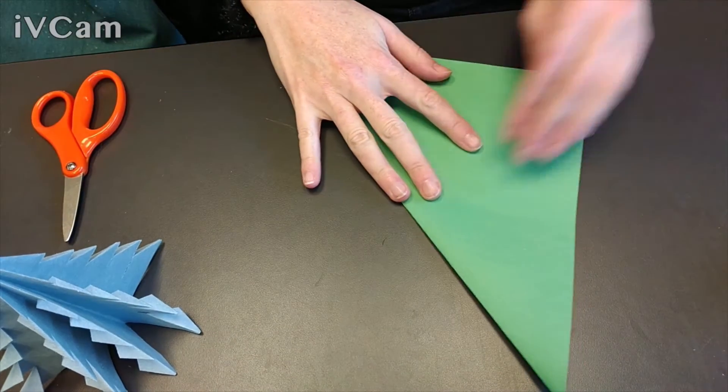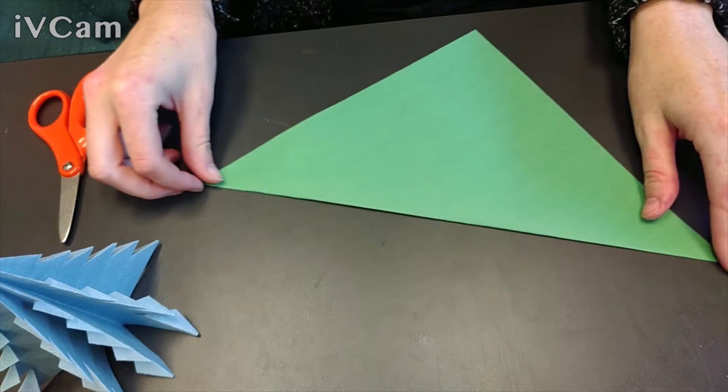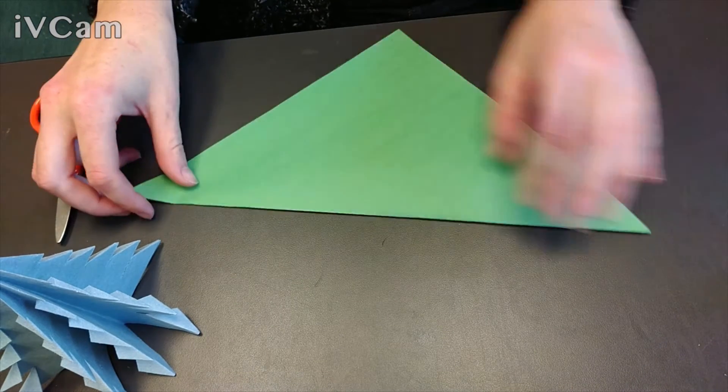First thing you're going to do is fold your paper into a big square. Then we're going to fold it into a smaller square.